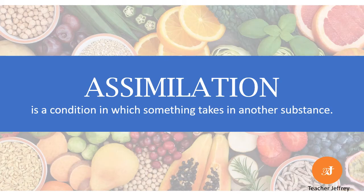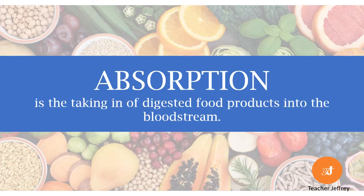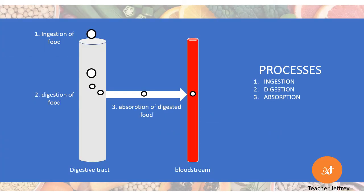According to Wikipedia, assimilation is a condition in which something takes in another substance. Last video, we studied about absorption of digested food products. We managed to understand that absorption is the taking in of digested food products into the bloodstream. In the diagram, this happens after digestion in number 2 process. Absorption is number 3. Now these digested food products are in the bloodstream.